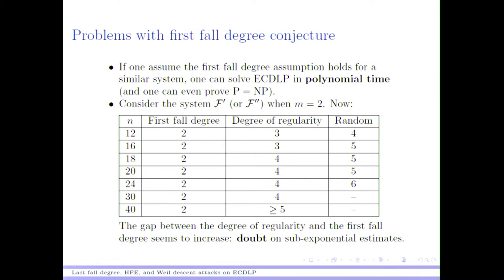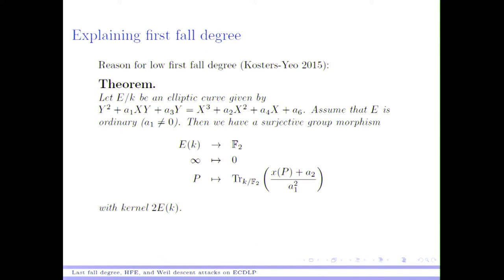Let me explain where this first fall degree of two comes from. Surprisingly, if you have an elliptic curve over a field of characteristic two which is ordinary, then there exists a trace map — a surjective morphism to F_2, which factors through taking the X coordinate. Working with this map, you can show it causes the first fall degree to be equal to two.